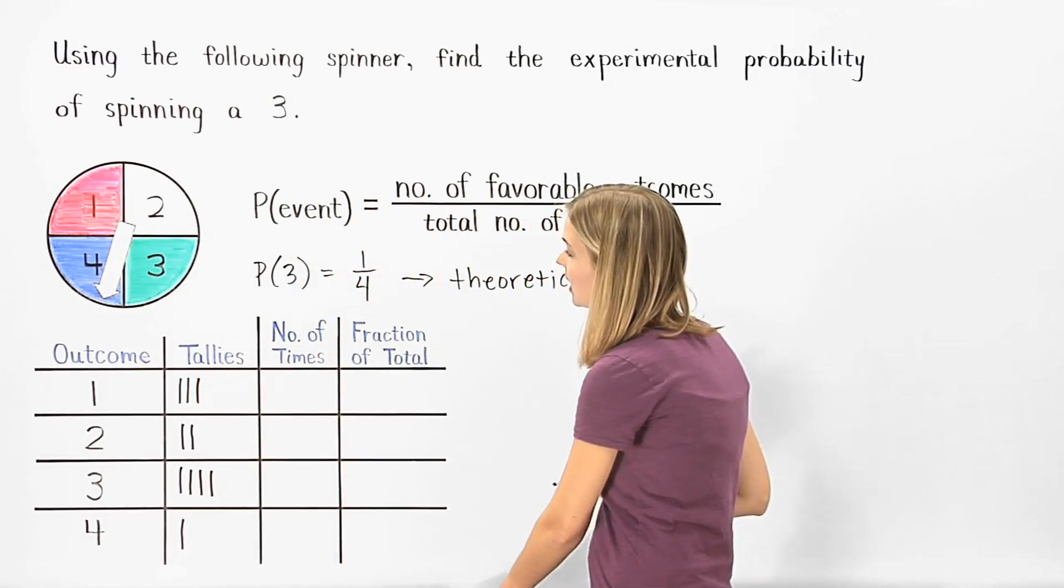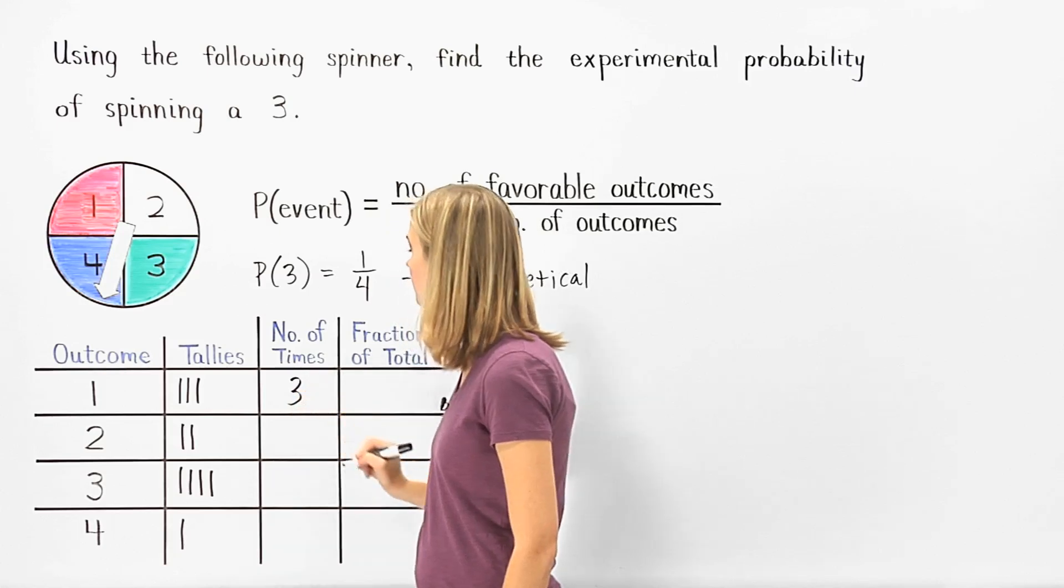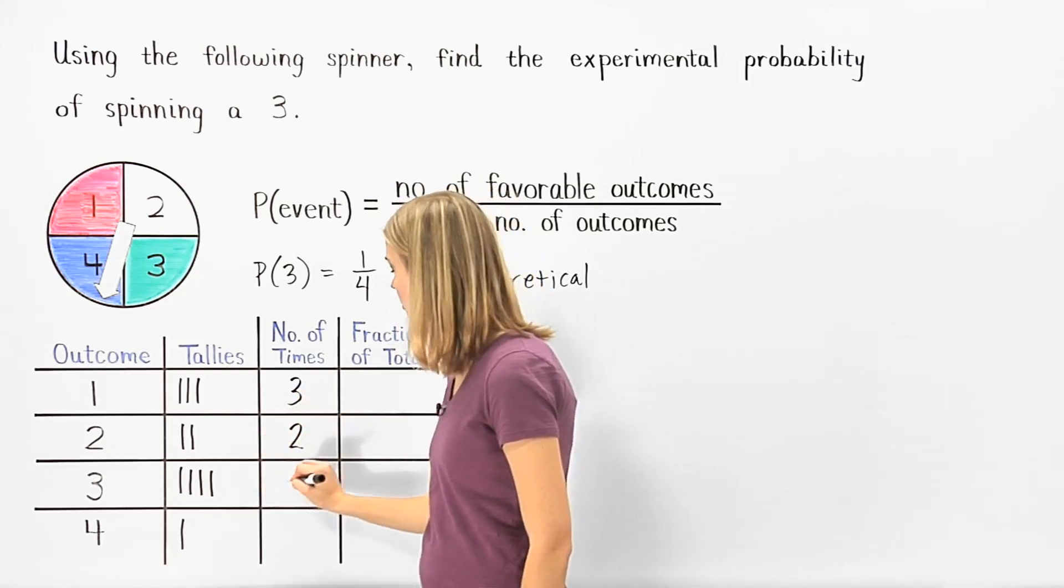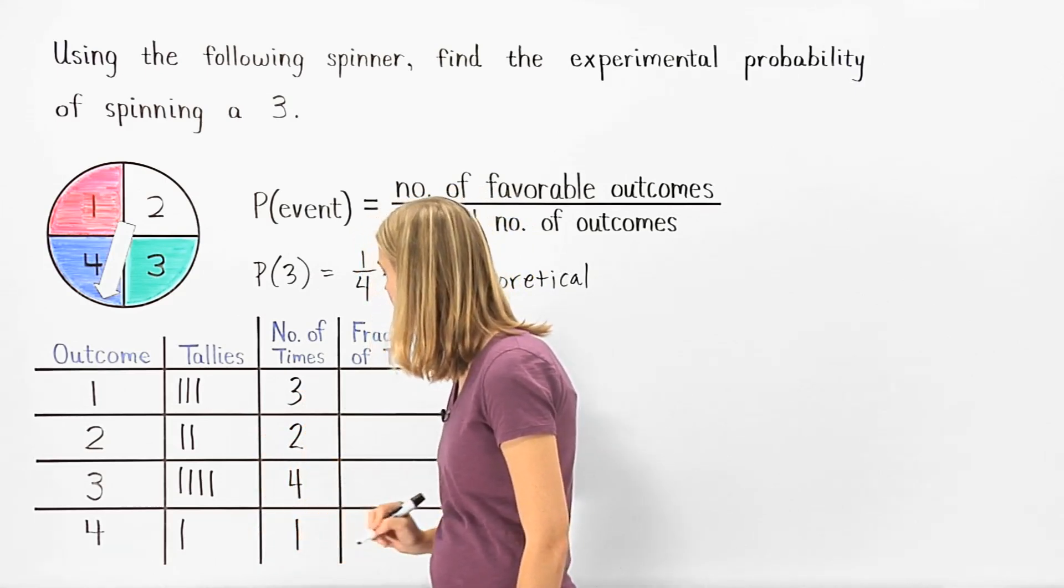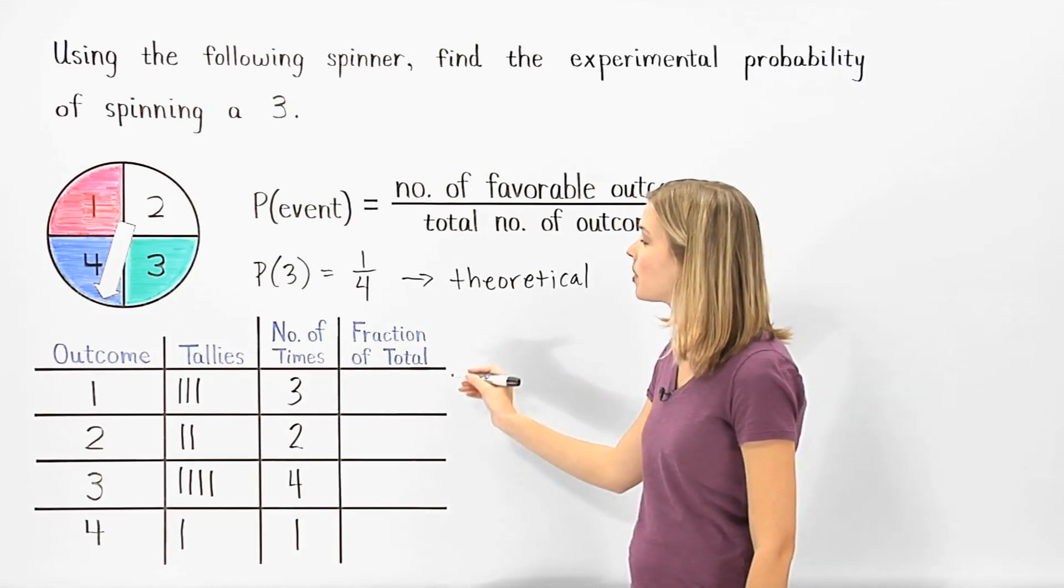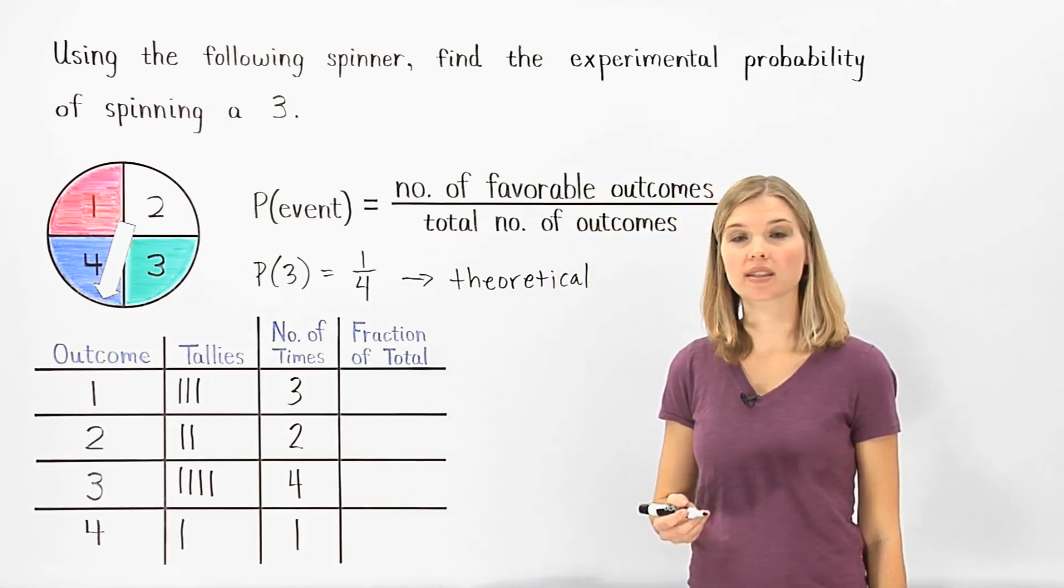Now, filling in the number of times column, we can see that we spun a 1 three times, we spun a 2 two times, we spun a 3 four times, and we spun a 4 one time. Finally, in the fraction of total column, we put the number of times we spun each number over the total number of spins, which was 10.